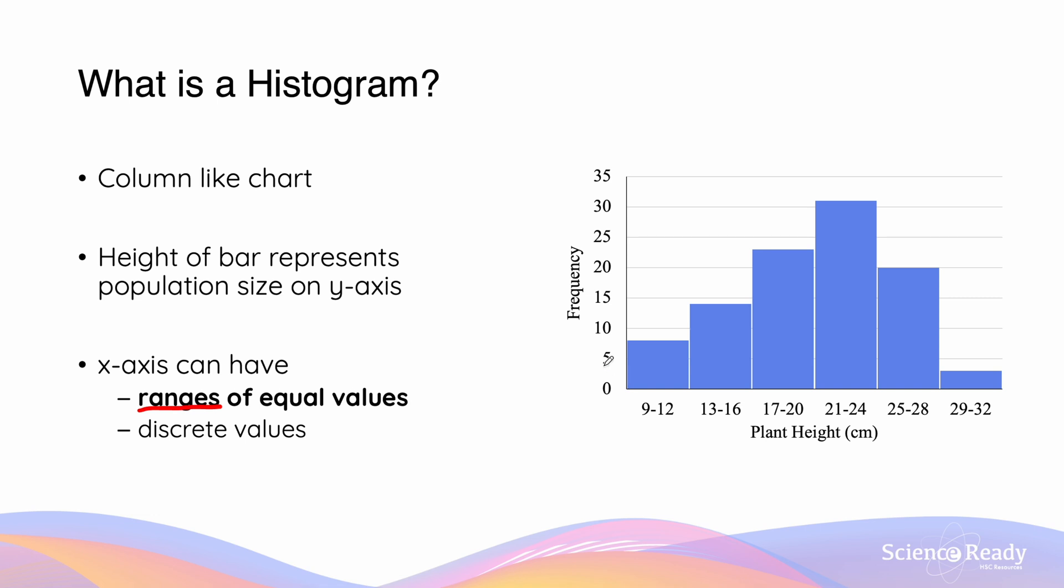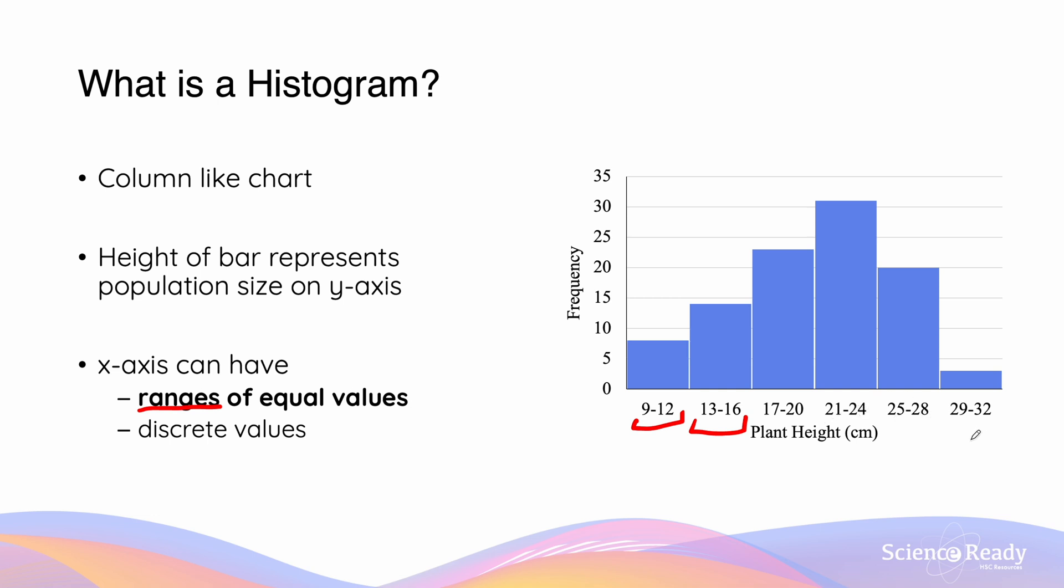So in this case, we have a range of equal values. We can see that each of these bins is going to contain a range of three from 9 to 12, 13 to 16, 17 to 20, 21 to 24, 25 to 28, and 29 to 32. However, in this case, we are going to have bins which have discrete values. So this is the frequency of 18, 19, 20, all the way to 25.